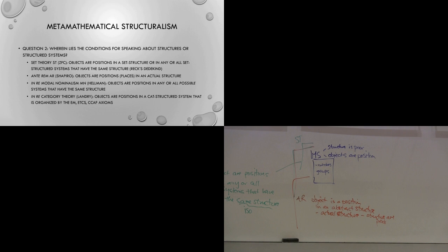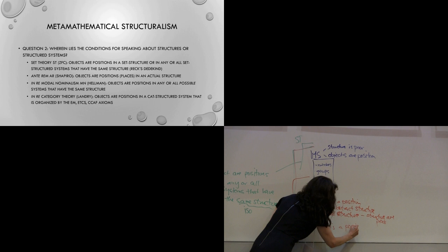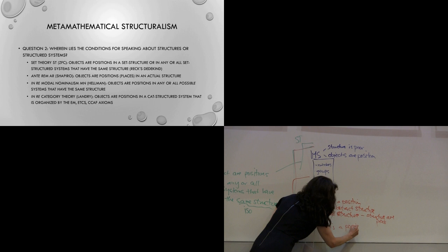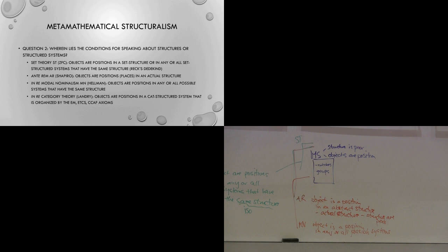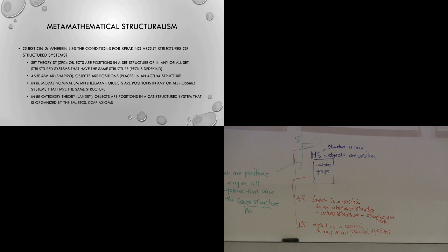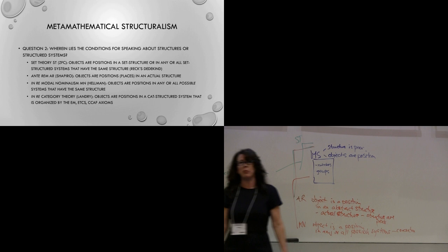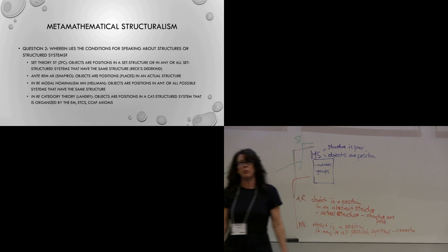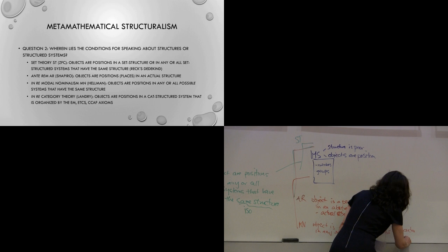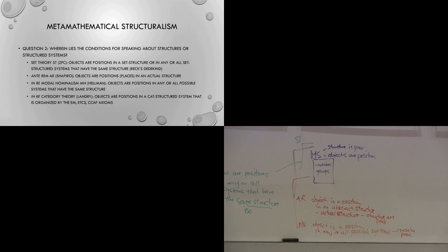If we're not happy with that because we don't want actual structures, we could go the modal nominalist route — Hellman — and say an object is a position in any or all possible systems. We eliminate talk about structures and just talk about possible systems. Interestingly, when it comes to talking about those possible systems, we're going to discover that we need this notion of concreta — concreta becomes the things that fill in the positions of possible structures. So we have to take concreta or concrete systems as prior.